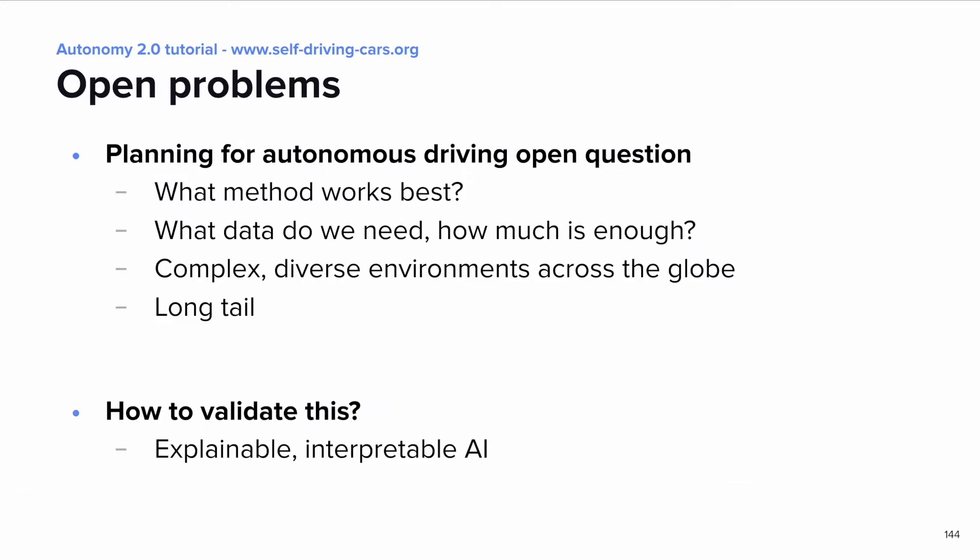I'd like to conclude by listing several challenging but important open questions, as self-driving remains an ongoing and unsolved problem. First, which method actually works best — classical planning, reinforcement learning, or imitation learning? And if it is a learned approach, what data do we need and how much? Further, self-driving should work all over the world, requiring models that can handle all different conditions. There is a long tail in the distribution, meaning there are rare but crucial events such as accidents. Finally, another important task is validation — and here explainable, interpretable AI methods are relevant. With that, I'd like to pass it on to Borja for a practical hands-on session.